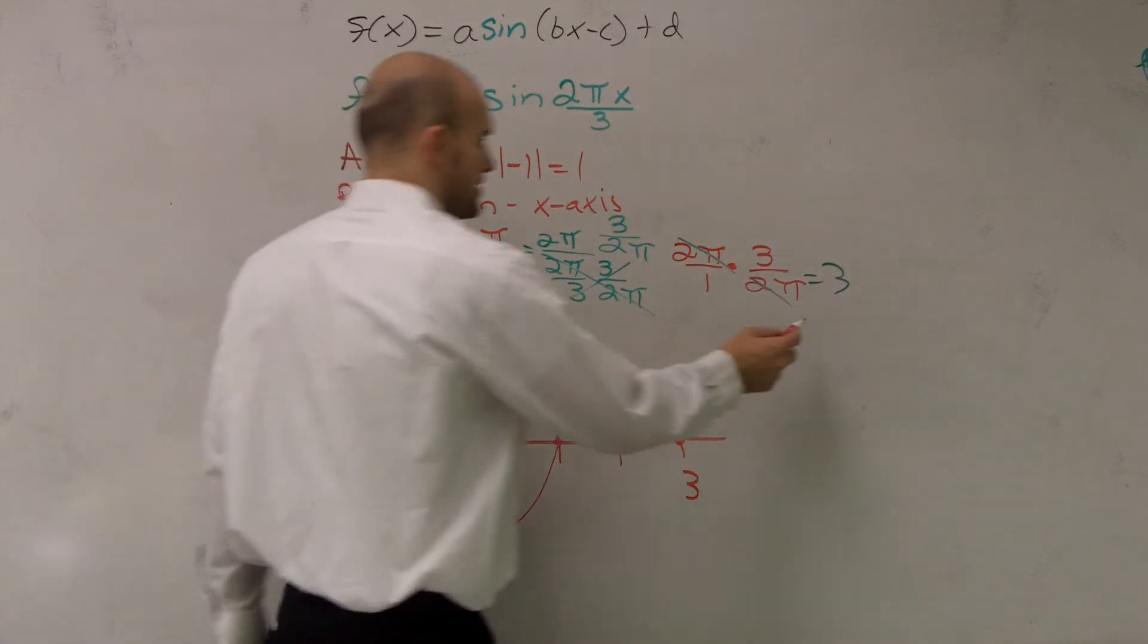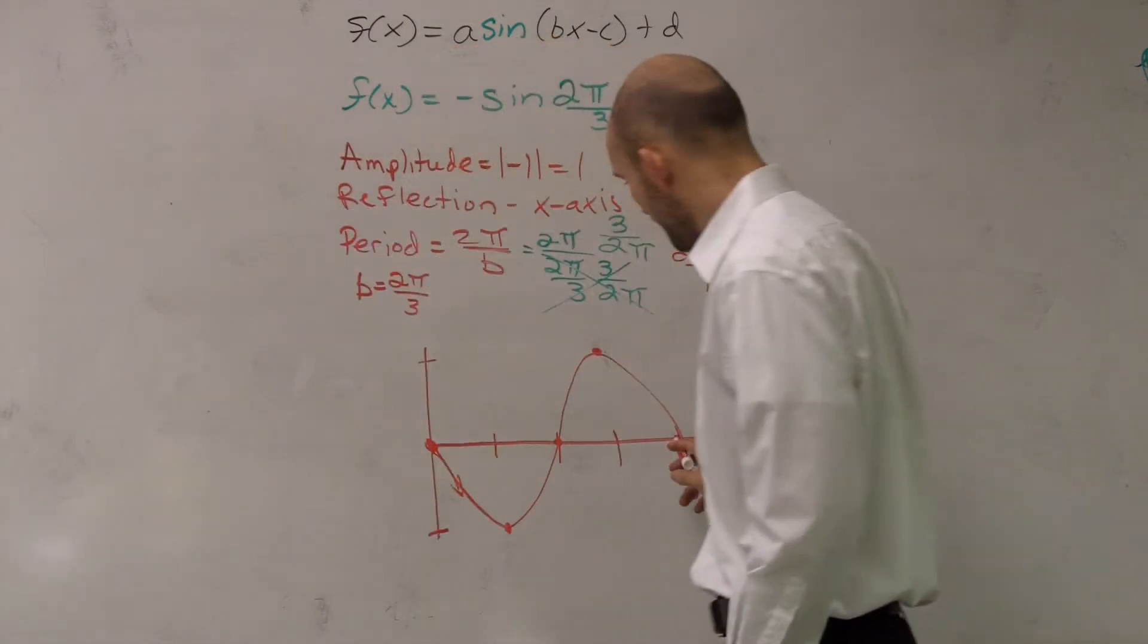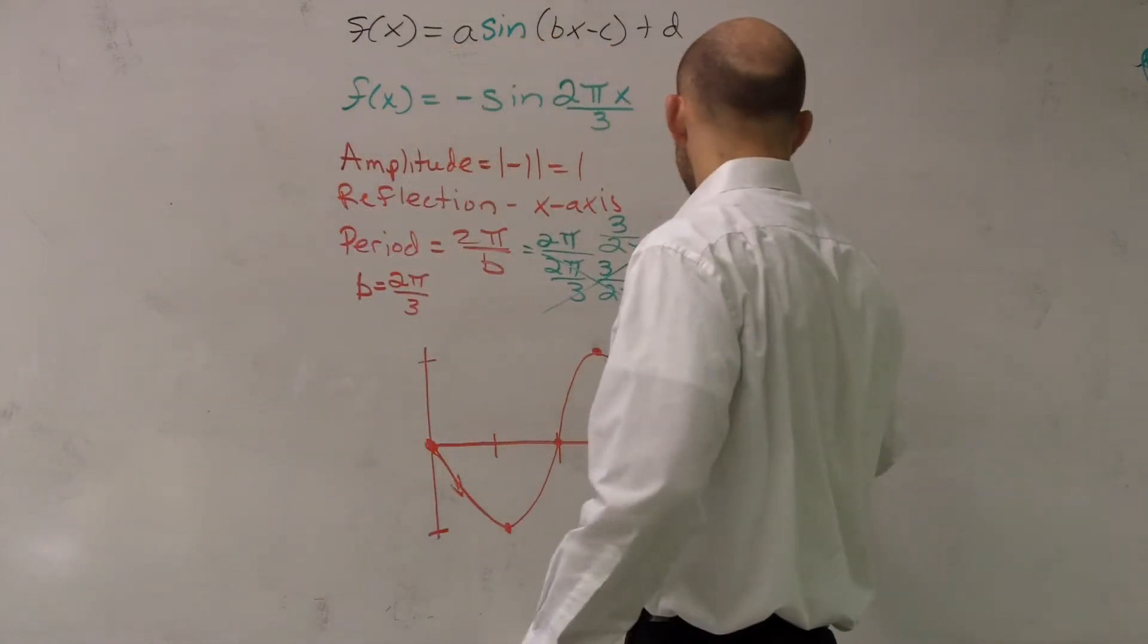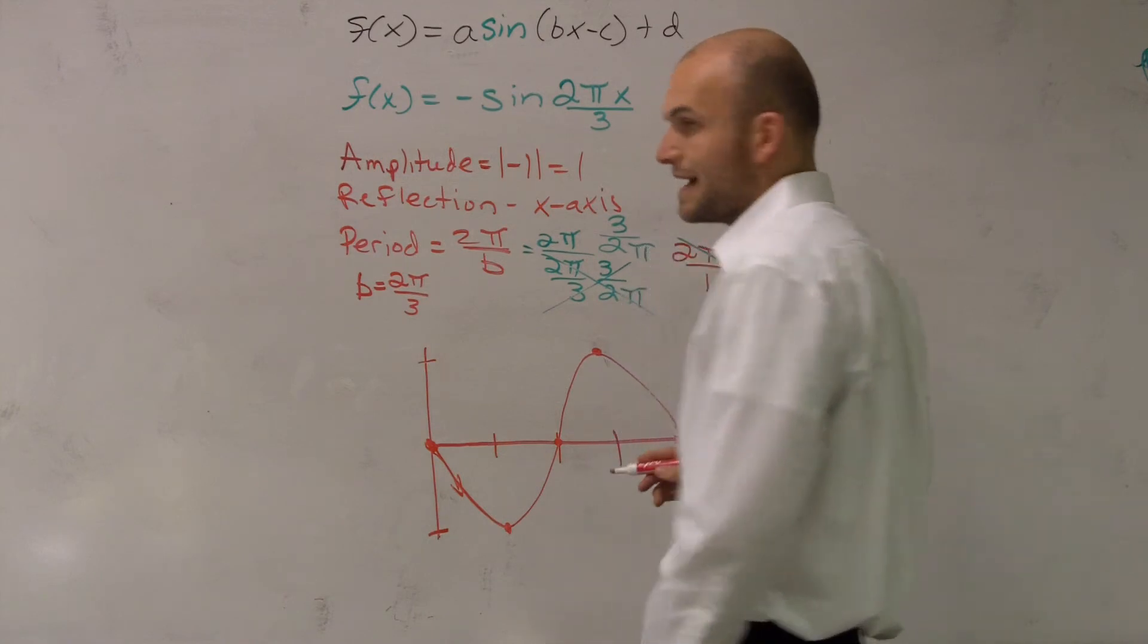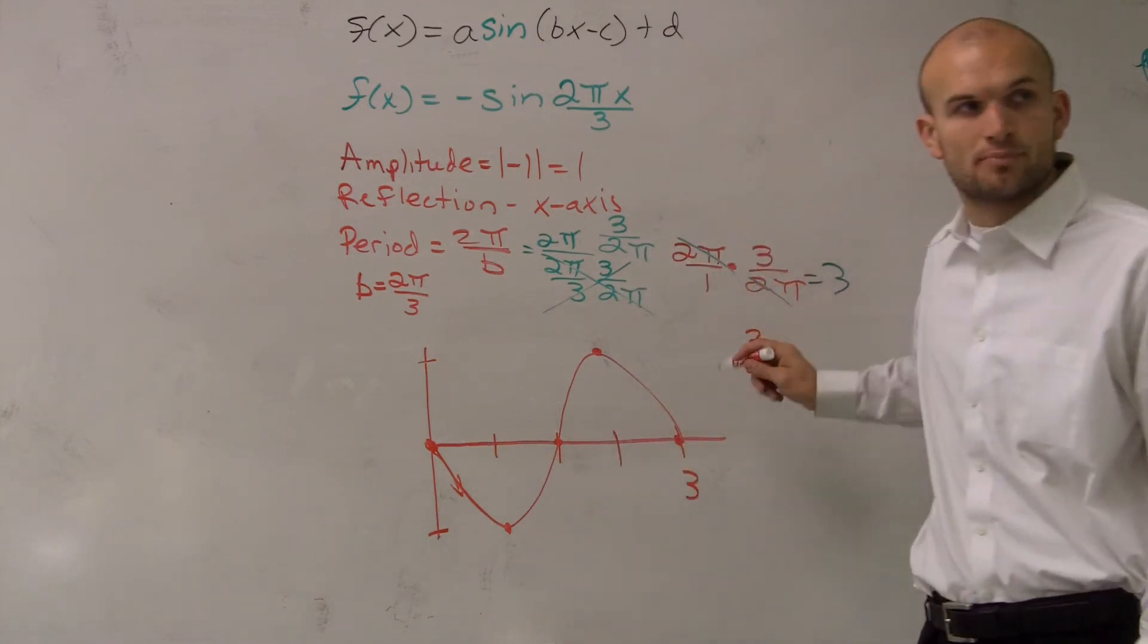So what I need to do is I need to say, I need to take, since there's 4 of them, 1, 2, 3, 4, I need to take 3, and you divide your period always by 4 important points.